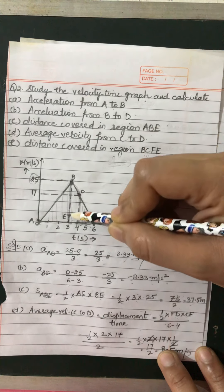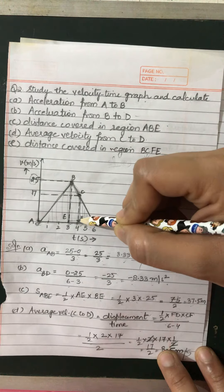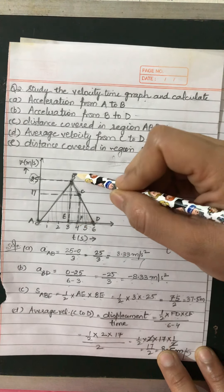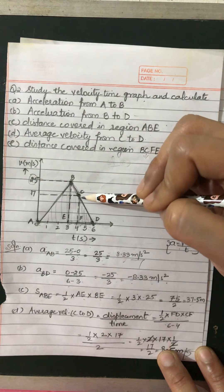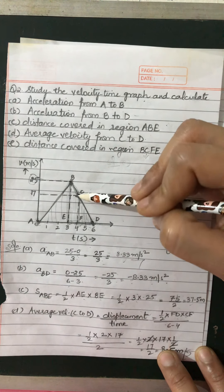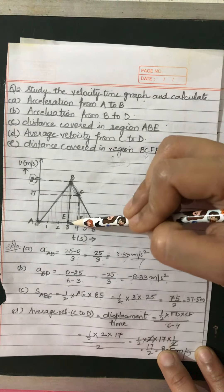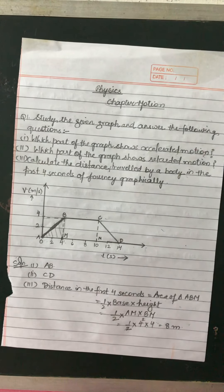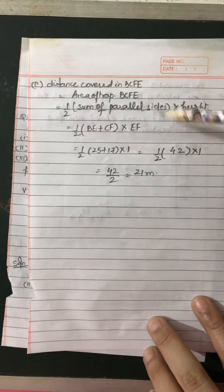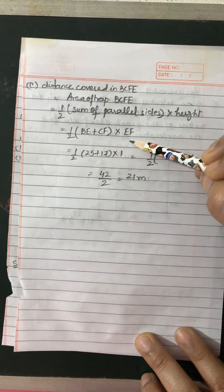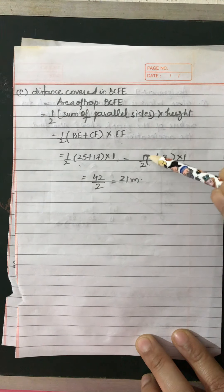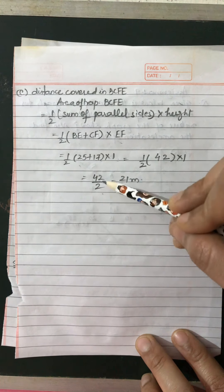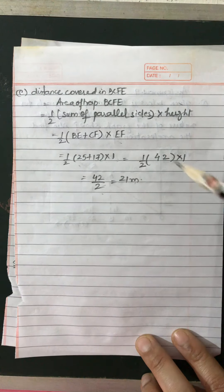Area of trapezium BCFE = half × sum of parallel sides × height. The parallel sides are BE and CF. BE = 25 and CF = 17. Height EF = 4 minus 3 = 1. So area = half × (25 + 17) × 1 = half × 42 × 1 = 42/2 = 21 meters. The distance covered in region BCFE is 21 meters.